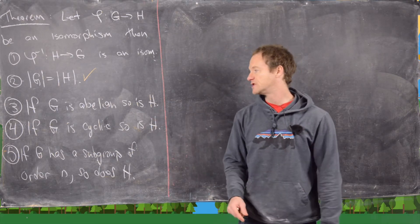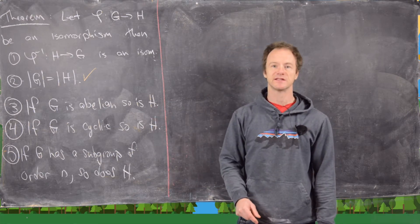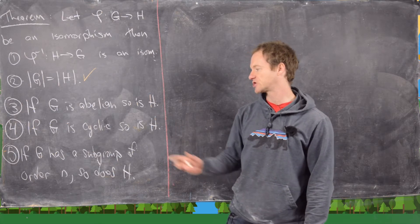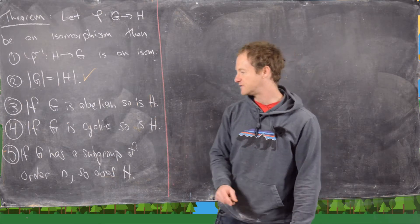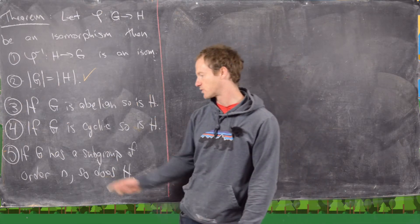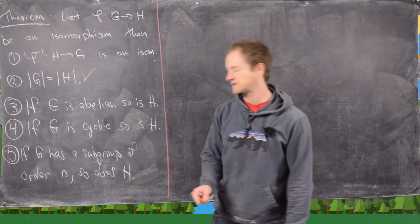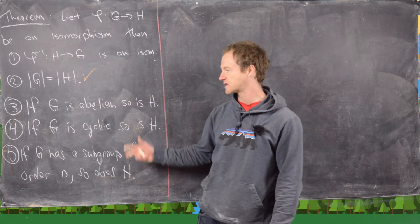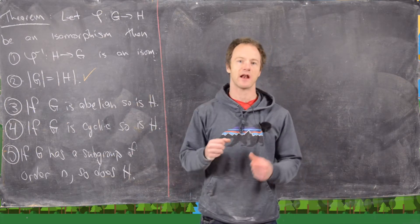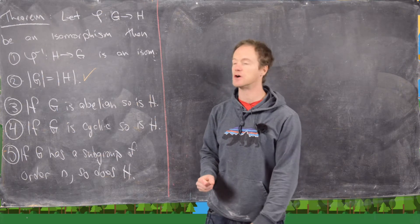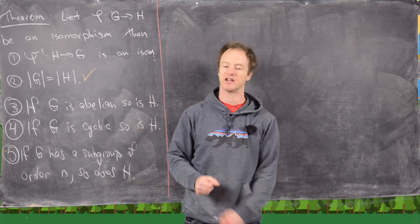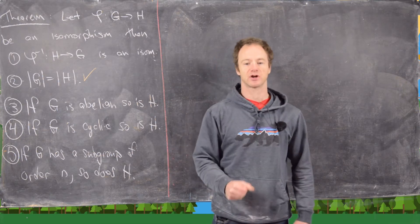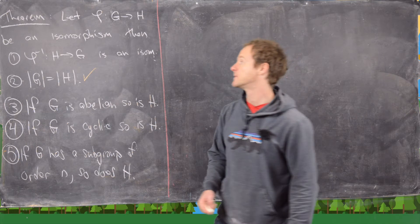Third, if G is abelian, so is H. Fourth, if G is cyclic, so is H. And fifth, if G has a subgroup of order n, so does H. These last three say that a bunch of the structure from G goes over to H — in fact, all of the structure of G will go over to H.